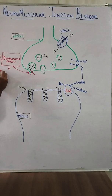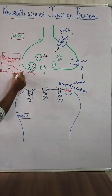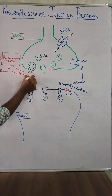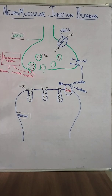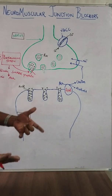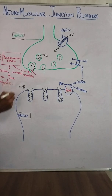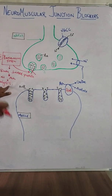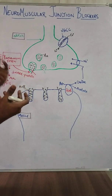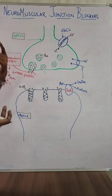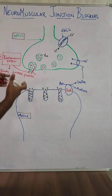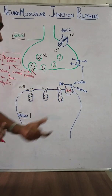Botulinum toxin blocks the SNARE proteins, which causes no acetylcholine release, leading to flaccid paralysis. This is also used dermatologically to treat wrinkles — botulinum toxin is injected into the wrinkles, causing flaccid paralysis of the underlying muscles and thus the disappearance of wrinkles.